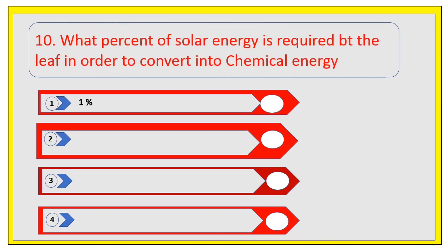What percent of solar energy is required by the leaf in order to convert into chemical energy? Options are 1%, 2%, 3%, and 5%. The right answer is 1%.